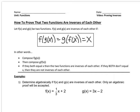Basically what you're going to do is compose f of g of x, which is this piece. Then you're going to compose g of f of x, which is this piece. And if they both equal x, then the two functions are inverses of each other. If they both don't equal x, then they're not inverses of each other.